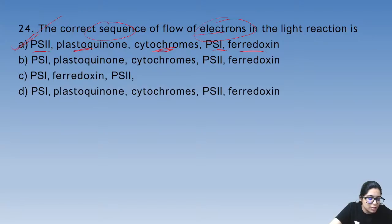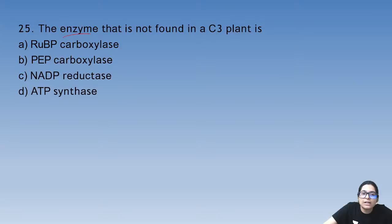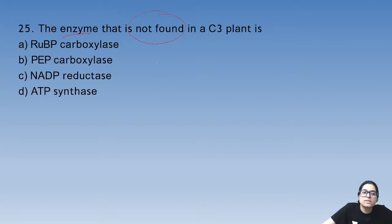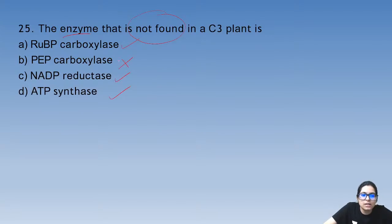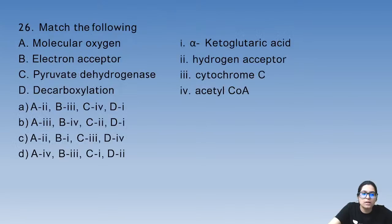All the questions seem to be getting solved — that is very amazing. Question 25: the enzyme not found in C3 plants — it will be found here, here, but not this one. The answer for question 25 is B.